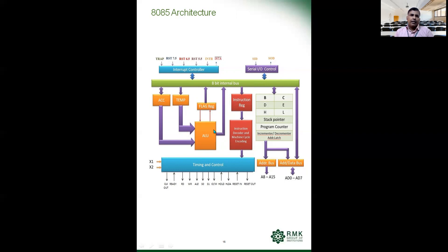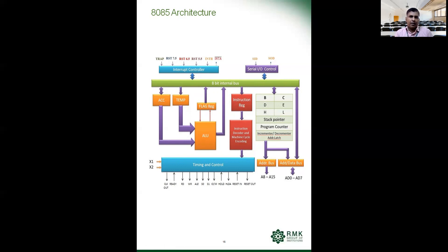As you can see in the diagram, the processor contains eight registers which can be paired — BC, DE, and HL — and they are eight bits in length. They can be clubbed together as BC pair, DE pair, and HL pair, forming 16-bit registers which are used during program execution for data movement and processing tasks. These registers are very useful and are general purpose in nature.